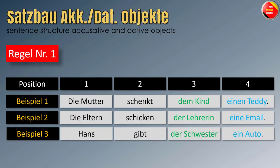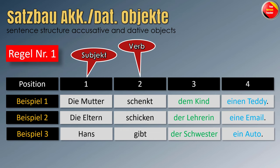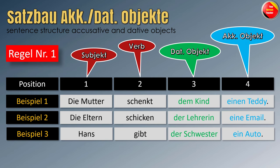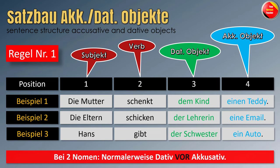You have here the three examples. Position eins ist das Subjekt, Position zwei ist das Verb, Position drei das Dativobjekt, und Position vier ist das Akkusativobjekt. This is the normal rule. If you have two objects, a dative and accusative object, usually Dativobjekt zuerst — dative first and then accusative. Die Regel heißt: bei zwei Nomen normalerweise Dativ vor Akkusativ.